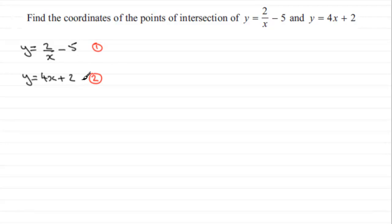And there's various ways that you can do simultaneous equations. I'm going to do substitution here though. I'm going to equate 1 with 2 or basically substitute equation 1 into equation 2. So wherever I see y written in equation 2, I'm going to replace it with 2 over x minus 5. So what we've got then is therefore 2 divided by x minus 5 equals the 4x plus 2.